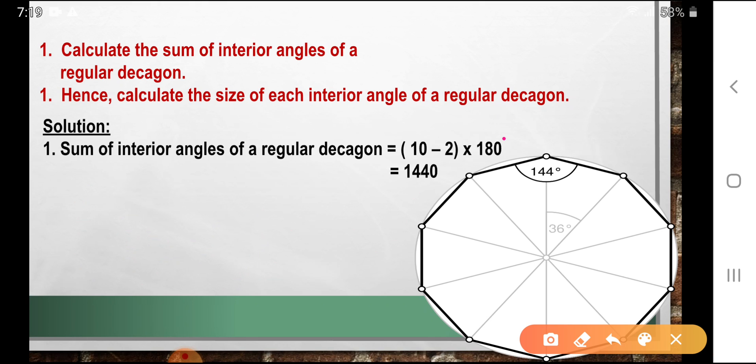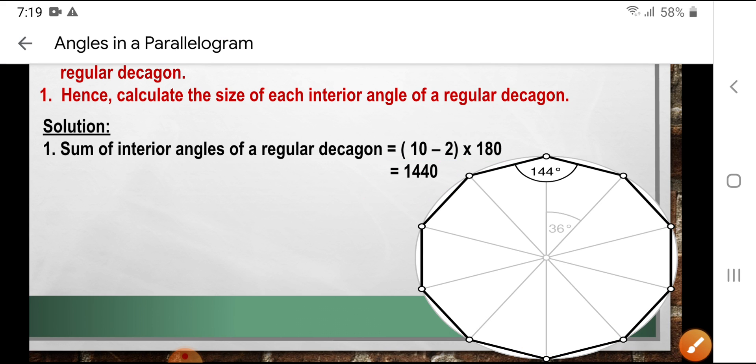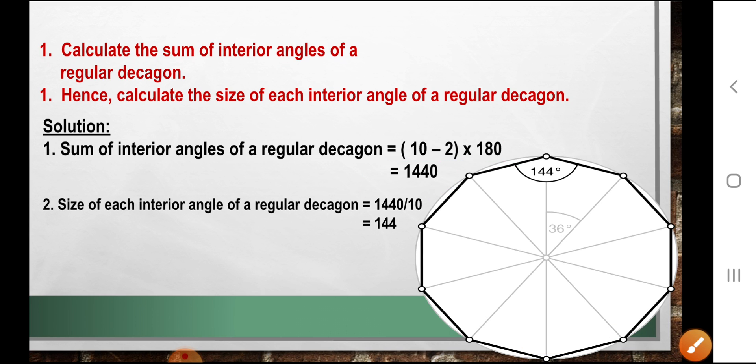So now you calculate 10 minus 2, so it will be 8. So 8 times 180, so it will be, this is definitely 1440 degrees. All right, so here is another problem.